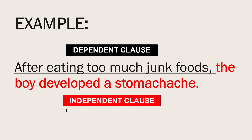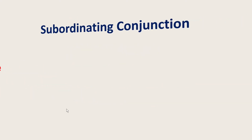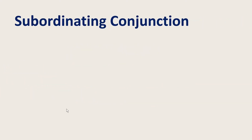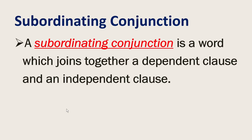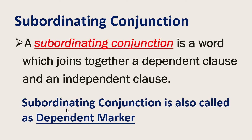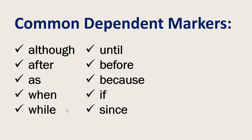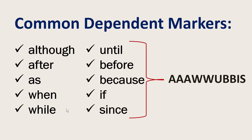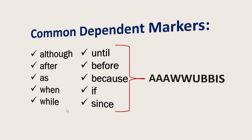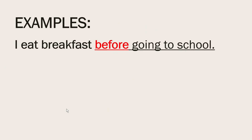To be able to recognize the dependent and independent clause in a sentence, a subordinating conjunction would serve as a clue. A subordinating conjunction is a word which joins together a dependent clause and an independent clause. It is also called a dependent marker — it leads us to find and recognize the dependent clause in a sentence. The common dependent markers are: although, after, as, when, while, until, before, because, if, since. This can be remembered through a mnemonic: ALGOOBIES. In the sentence 'I eat breakfast before going to school,' the word 'before' is the subordinating conjunction which serves as a dependent marker.